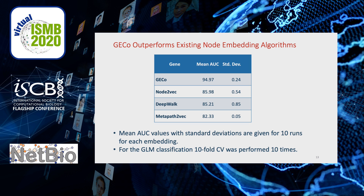We evaluated the performance of Gecko by comparing it to state-of-the-art node embedding methods. We used RAT gene disease annotations at the RAT Genome Database to determine the set of ground-truth hypertension disease-related RAT genes. Because of the stochastic nature of the algorithms, we ran all of them 10 times to generate gene embeddings and used a generalized linear model for classification. Gecko outperformed the second best-performing algorithm consistently by about 9% margins.